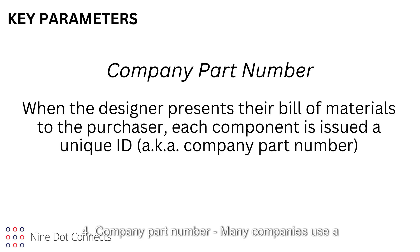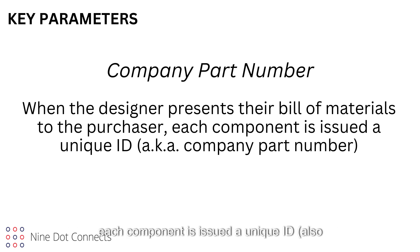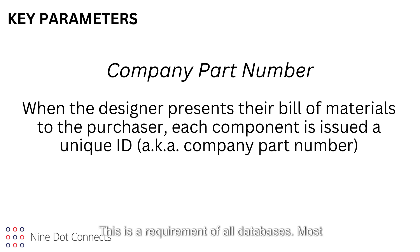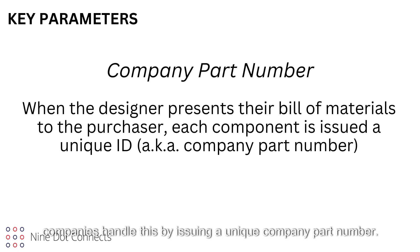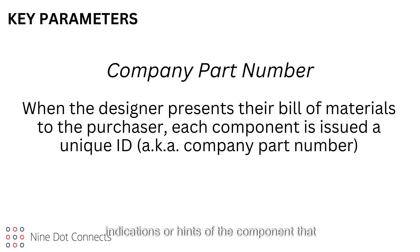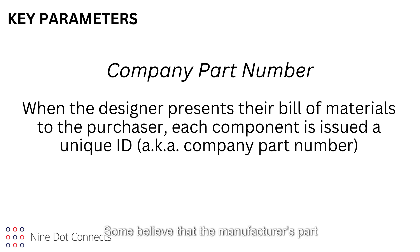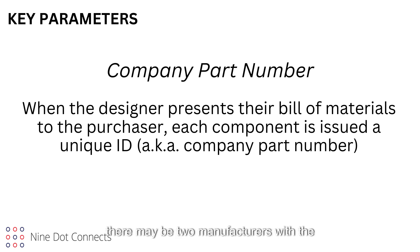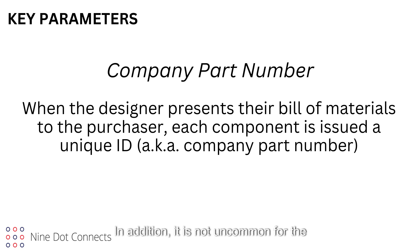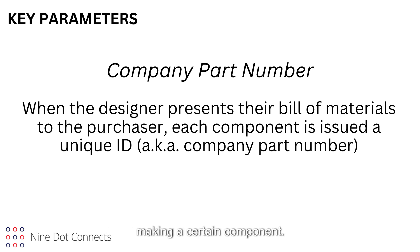4. Company part number — many companies use a purchasing database system. When the designer presents their bill of materials to the purchaser, each component is issued a unique ID, also known as a company part number. This is a requirement of all databases. Most companies handle this by issuing a unique company part number. The number itself does not require any indications or hints of the component that has been assigned to it; most companies typically use the next available number. Some believe that the manufacturer's part number can serve as the key field. This is not advised, because at some point there may be two manufacturers with the same part number. In addition, it is not uncommon for the manufacturer to change part numbers, especially if there was a merger, or if they change the process of making a certain component.